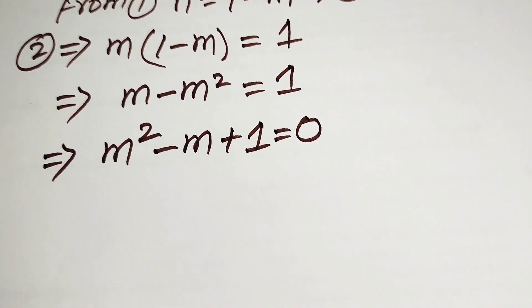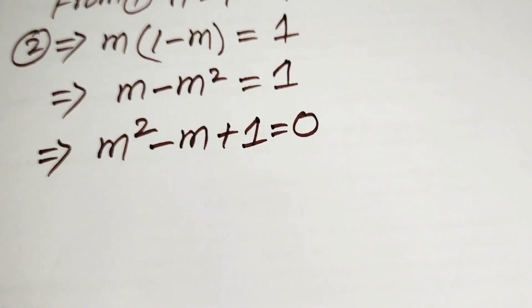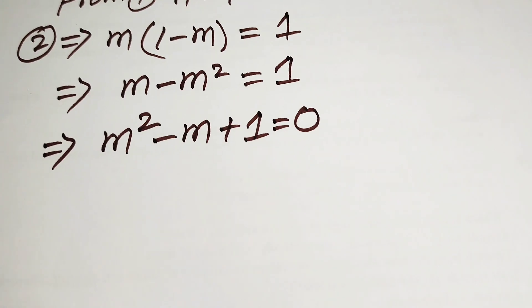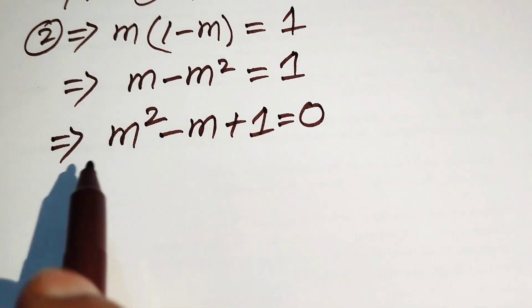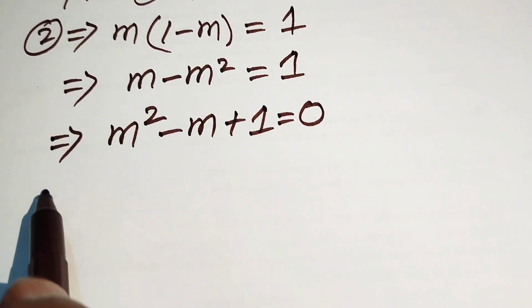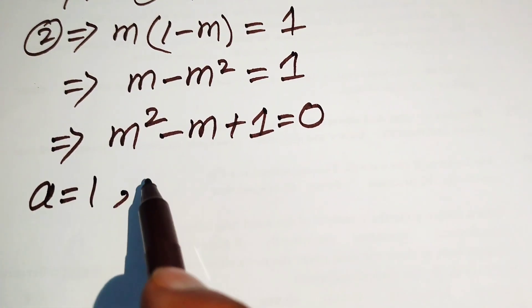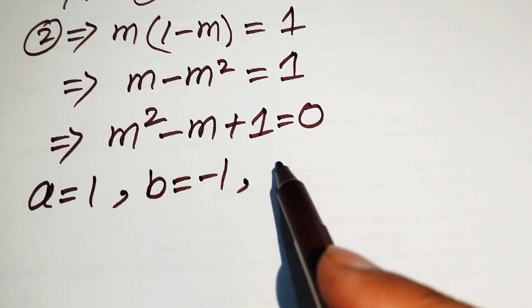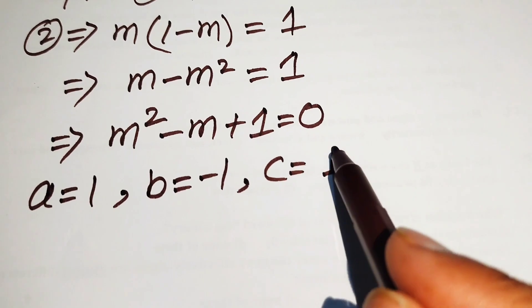Now we solve this quadratic equation using the quadratic formula. First we write the coefficients of this equation: a equals to 1, b equals to minus 1, and c equals to plus 1.